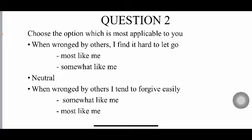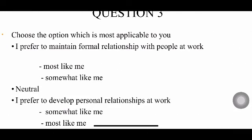So the question has three parts: the first part is 'When wronged by others, I find it hard to let go', the connecting part is 'or' with 'neutral' as the option, and the third part is 'When wronged by others, I tend to forgive easily'. For the first part the options are 'most like me' and 'somewhat like me', and for the third part it is 'somewhat like me' or 'most like me' again. Once the screen displays you can understand it clearly.